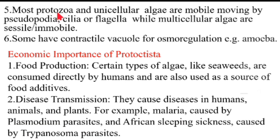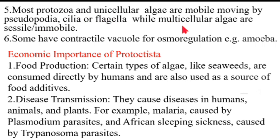Number five: most of the Protozoa and unicellular algae are mobile — mobile means they are able to locomote — and therefore they use locomotory structures called pseudopodia. Some use cilia or flagella. So the locomotory structures are pseudopodia, cilia, or flagella. Multicellular algae, on the other hand, are sessile, meaning they are immobile and not able to move.